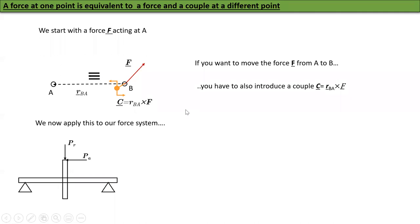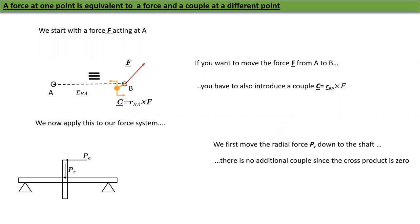We are now going to apply this to our force system. There are two forces. We first move the radial force down. There is no additional couple because the radial force is directly along the same axis, so the cross product will be zero. Now the axial force moves sideways, so it will have a couple. The additional couple that I have to add is diameter of the gear over two times PA and it's clockwise.